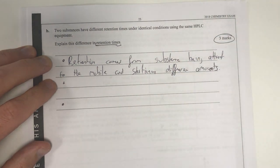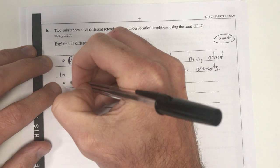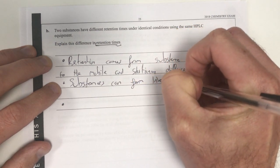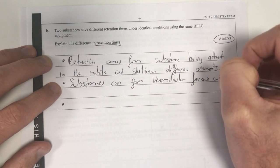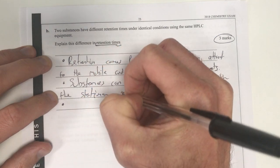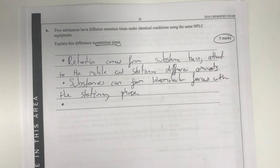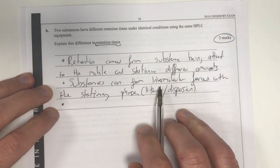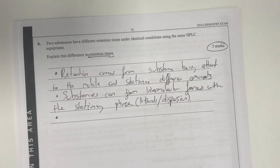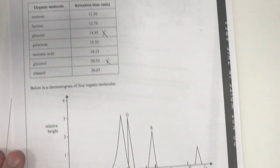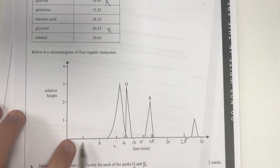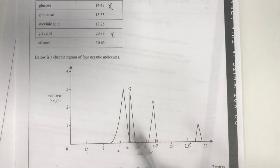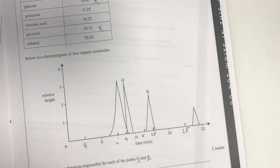So explain the difference in retention time. Retention time comes from attraction to stationary and mobile phases. So retention time comes from substances being attracted to the mobile phase and stationary phase at different amounts. Where does this different attraction come from? Well, it comes from the intermolecular forces. Substances can form intermolecular forces with the stationary phase. So we're going to talk about where these forces come from. These might be H bonds or dispersion forces, explaining what my intermolecular forces actually are.